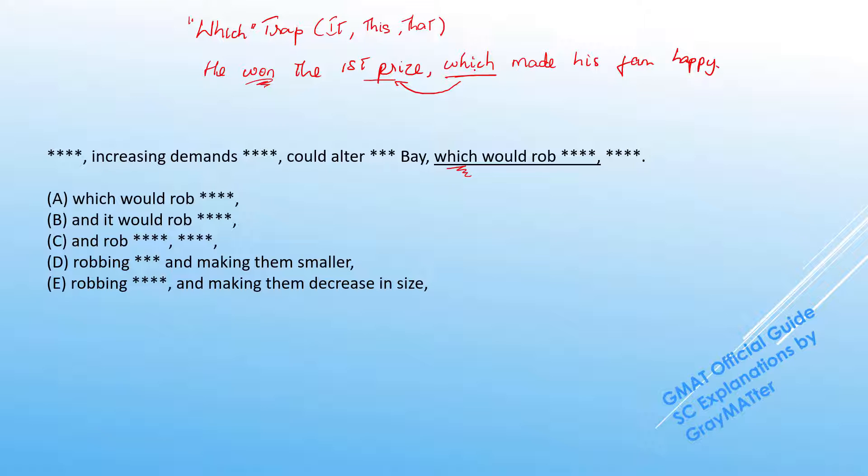Every time you see a which and any of these pronouns, make sure you understand whether GMAT is trying to trap you with the which trap, whether the which is actually referring back to the noun or is it trying to modify an action. This should not work. And that's the exact reason why A would not work.